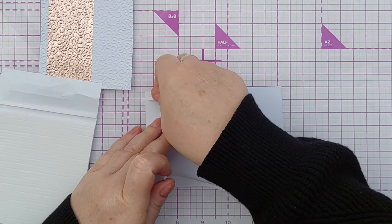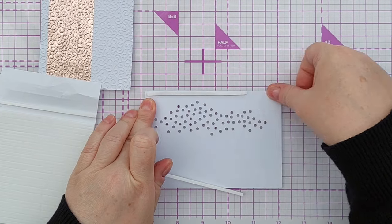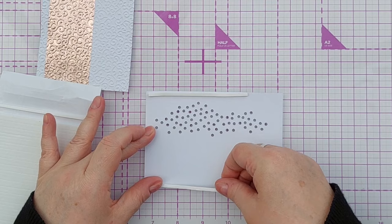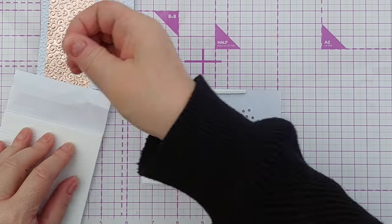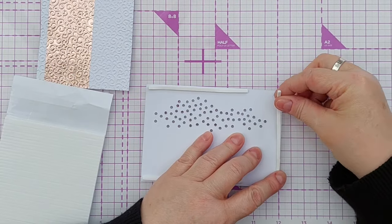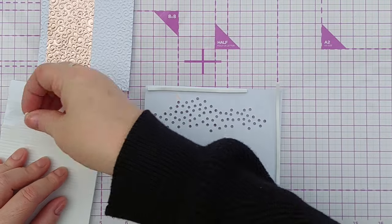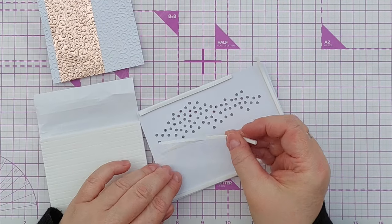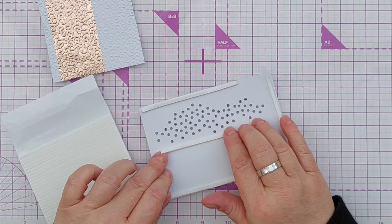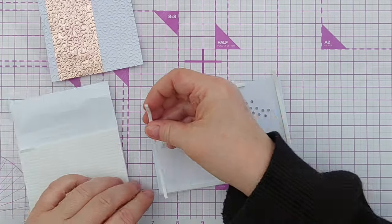So now what I want to do is add foam tape to the back of the front panel because I want a bit of a gap between the front and the back panel because that just creates lots of lovely depth and dimension.